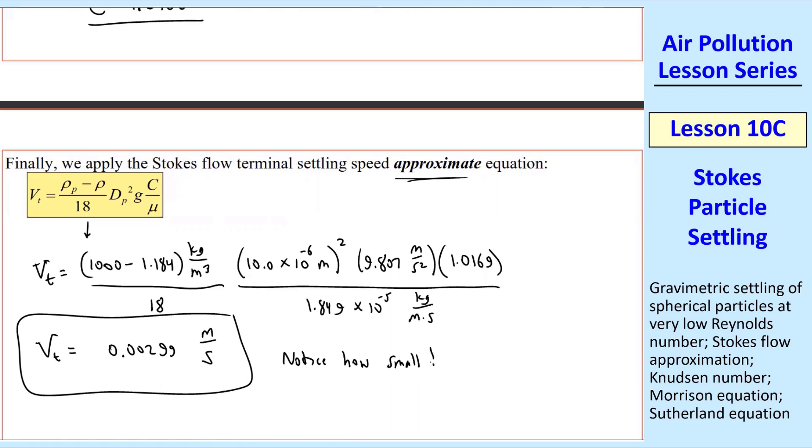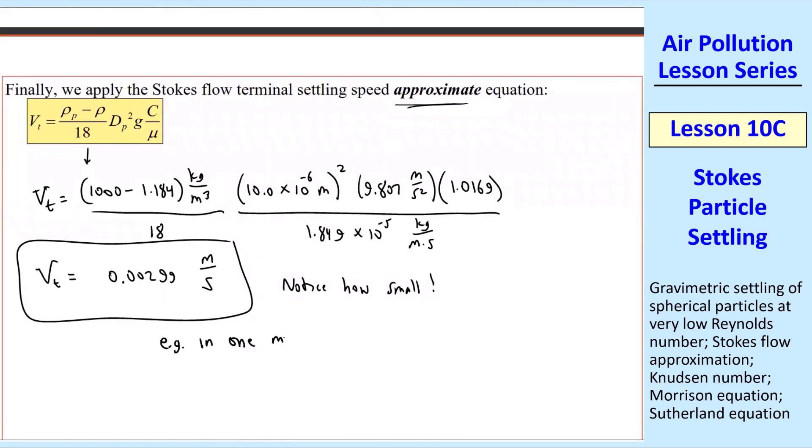Notice how small this is. For example, in one minute, how far does this particle fall? Well, remember from high school physics, delta Z is equal to VT times delta T. So delta T is one minute. VT is known there. So I plug in the values.